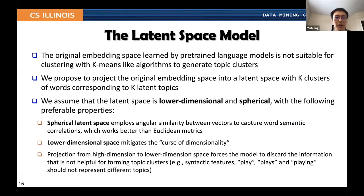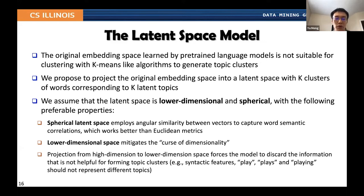The second module is the latent space module. Since the original embedding space from the pre-trained language model is not suitable for clustering, we propose to project the embedding space into a latent space and perform clustering there. We assume the latent space is lower-dimensional and spherical. The spherical latent space employs angular similarity instead of Euclidean-based metrics and is less prone to distance-based distortion in high-dimensional spaces. The lower-dimensional space mitigates the curse of dimensionality, and by projecting to it we preserve only features useful for topic discovery while discarding redundant information.